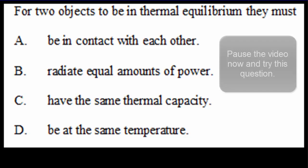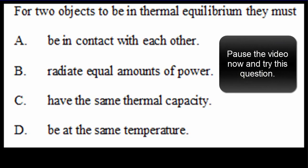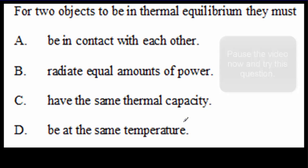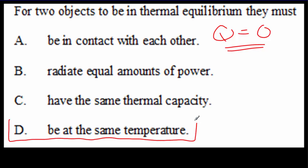Now, a few IB questions for you to try. Pause the video, read over the question, and try it for yourself, then come back for the answer. In this first one, for two objects to be in thermal equilibrium, that means no energy is being transferred. There's only no energy transferred when the two objects are at the same temperature. So the correct answer here is D.